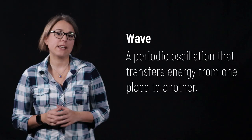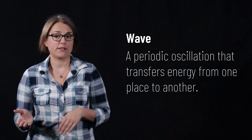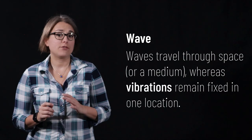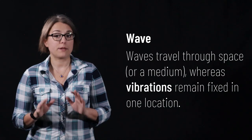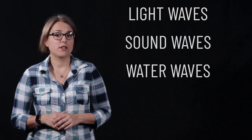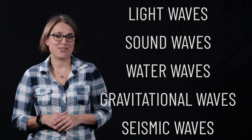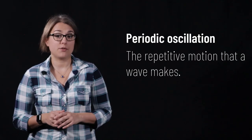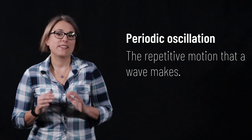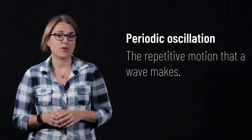A wave is a periodic oscillation that transfers energy from one place to another. Waves travel through space or some other type of medium, whereas vibrations remain fixed in one location. There are many different types of waves, some of which we'll discuss in more detail in future lectures: light waves, sound waves, water waves, gravitational waves, seismic waves, and more. The term periodic oscillation refers to the types of motion that waves make — a repeating pattern that gives rise to many wave properties.